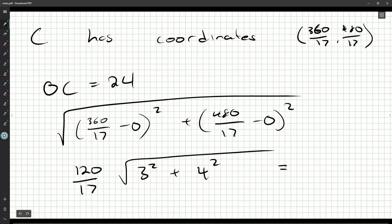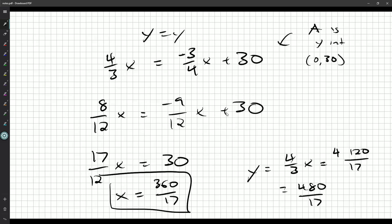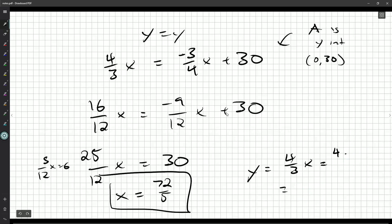So C has coordinates of 360 over 17, 480 over 17. And if you wanted to, you could double check to see that OC really does have a length of 24. How would you do that? Well, we can figure out the distance between two points, taking the difference in their X coordinates and squaring that and the difference in their Y coordinates and squaring that. And now there'll be 120 over 17 for both of them, and then square root of what's left over, 3 squared plus 4 squared, which should be equal to... something's gone wrong. Oh, this isn't an 8, this is a 16. Good. I was wondering why that 17 was there. That's why I wanted to do this extra double check step, because that did not look like a correct number to me. So 25, and there we go.